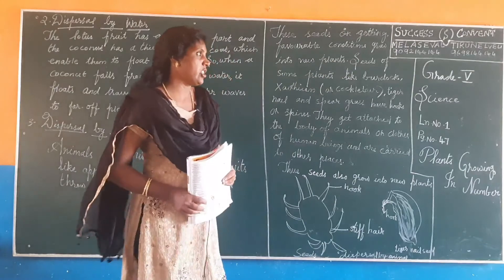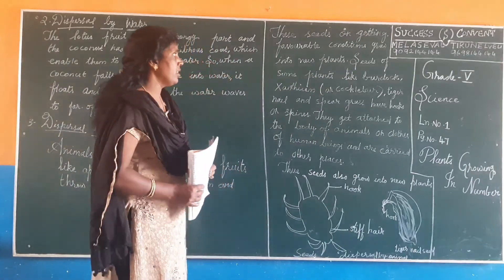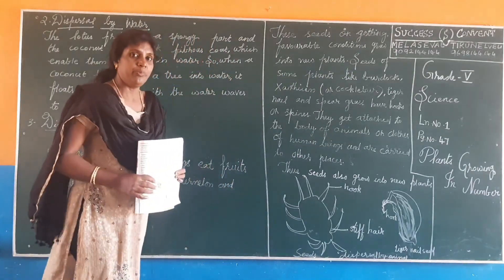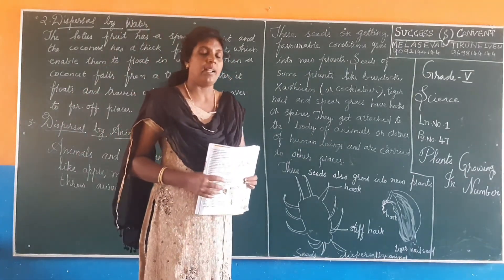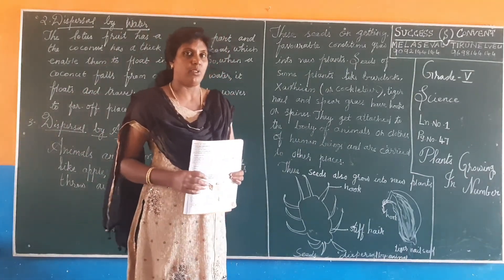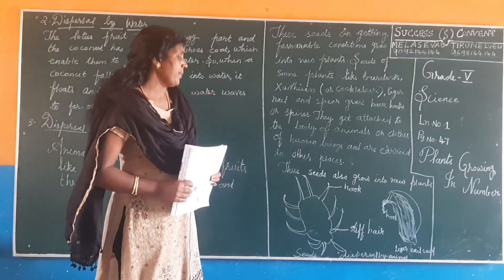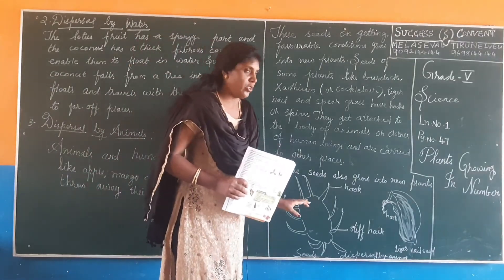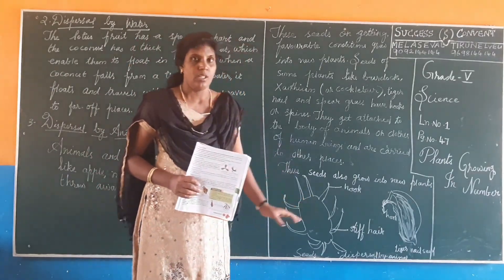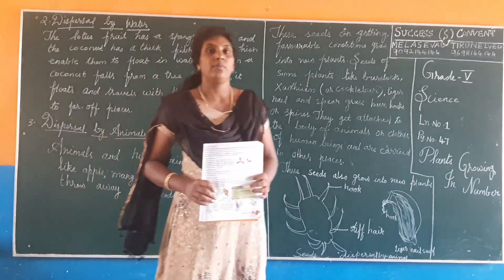Today's homework is page number 47. You have to read for one time and write neatly for one time, and you have to draw this diagram on your homework note. Okay, thank you.